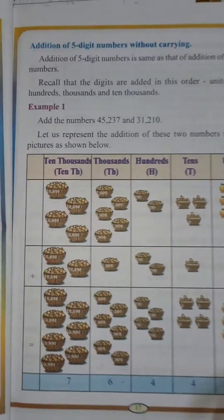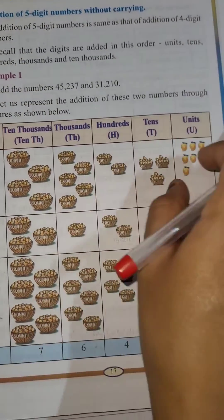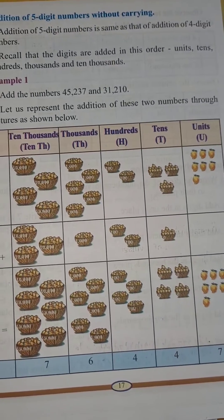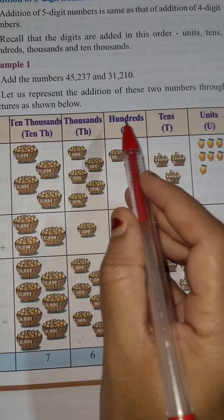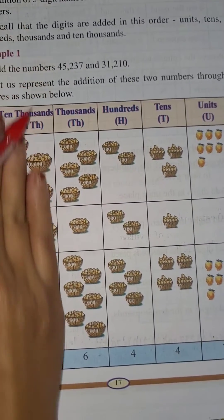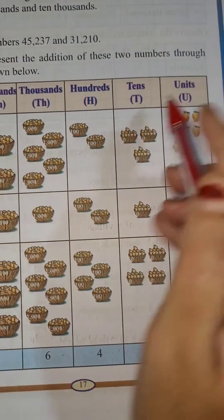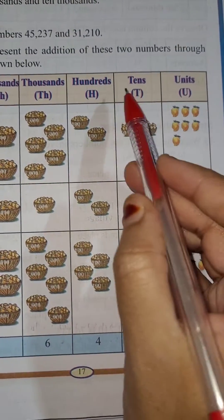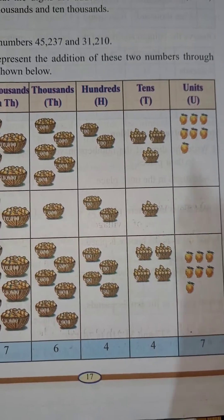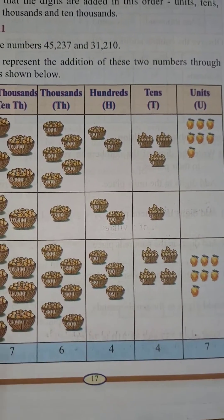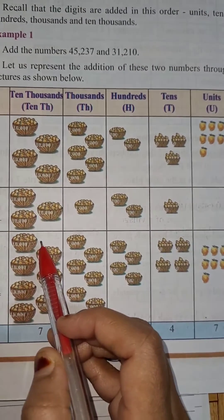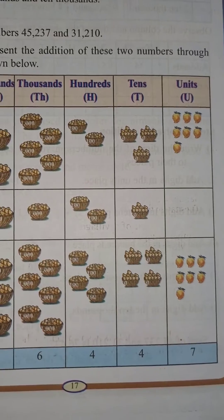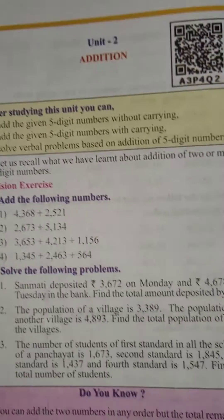Before going to solve it, can you tell me what this chart is called? Yes, this is called the place value chart. Do you remember? Here you can see the units: ones, tens, hundreds, thousands — up to 100,000. This much you have learnt in the previous class — only 4-digit numbers. But today in the 5th standard, you are going to study about the 5-digit number, that is 10,000. So first, let's do some revision with the 4-digit numbers.